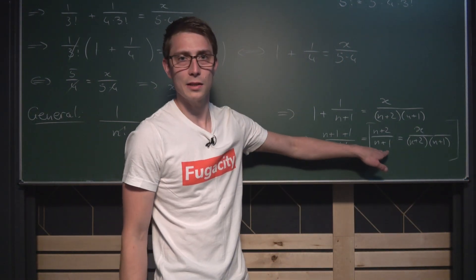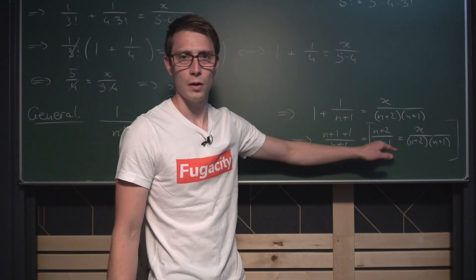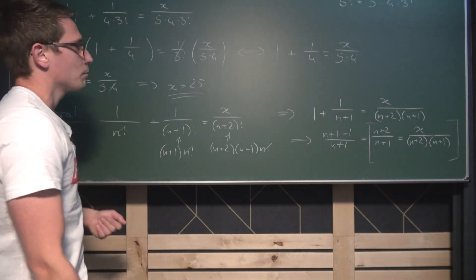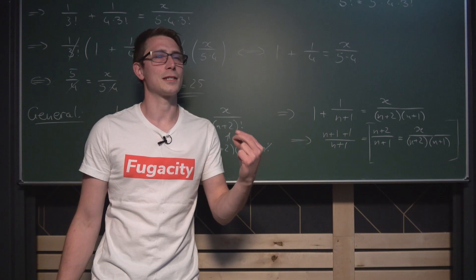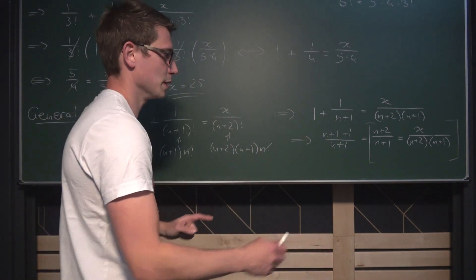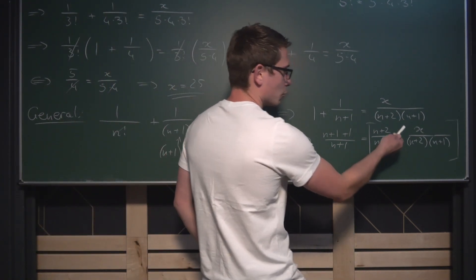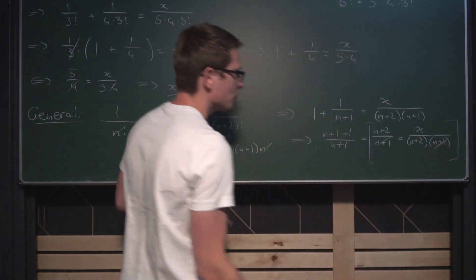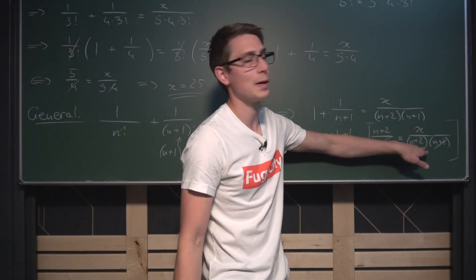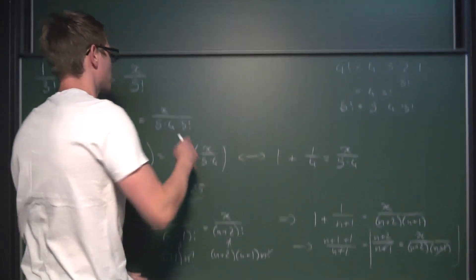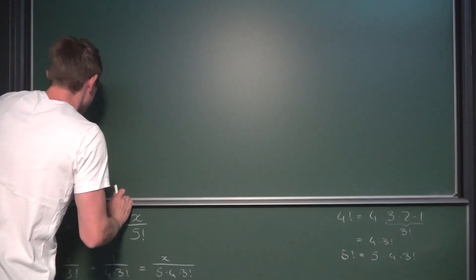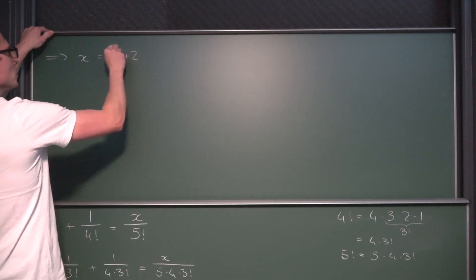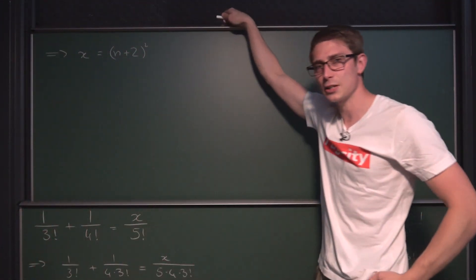Since n plus 1 is not going to be equal to zero — only in the borderline case n equals negative 1, which won't happen here — we can cancel it out on both sides by multiplying both sides by n plus 1. We're left with n plus 2 equals x divided by n plus 2. Multiplying both sides by n plus 2 gives us that x in our generalized equation is n plus 2 squared. Isn't that kind of cool?